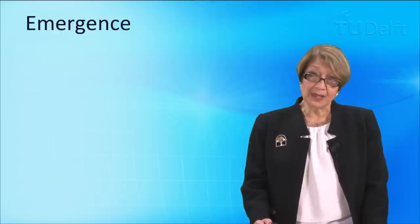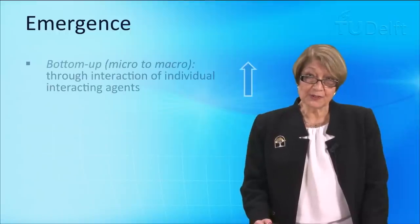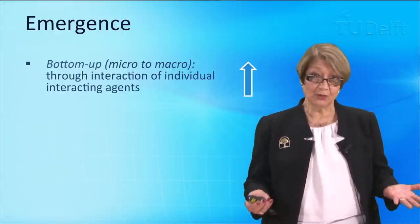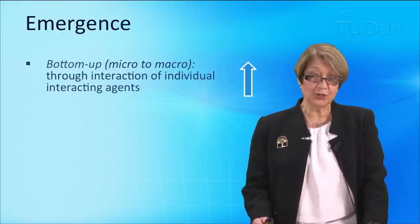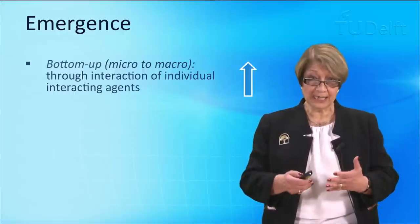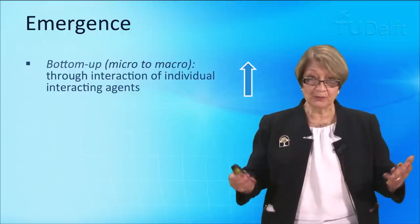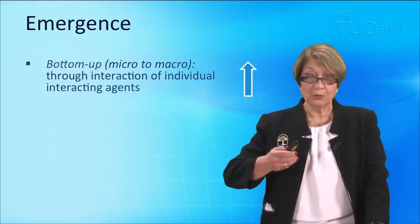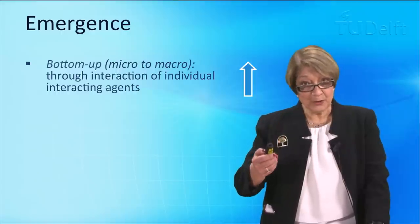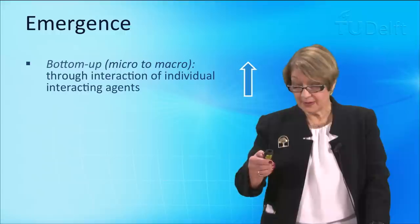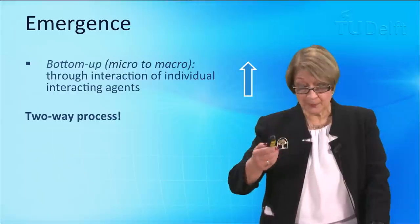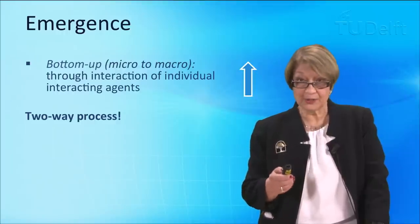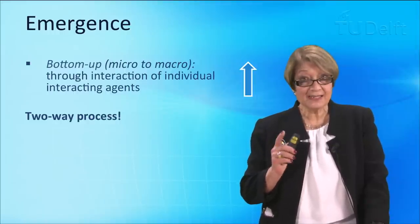Now, what we then need to understand is the next principle of emergence. Most of us, if you've done any kind of reading in complexity, you will have come across emergence. And the idea of emergence is that individual agents, this could be individual people, groups, etc., interacting together creates something which is both unpredictable and it has a bottom-up effect. But that is only half the story. Most of us, I think, are aware of only half the story.